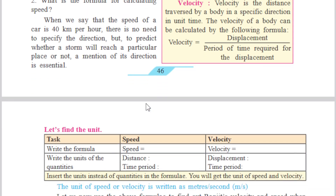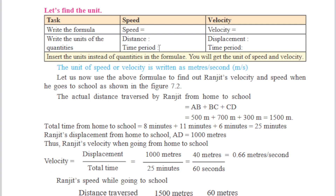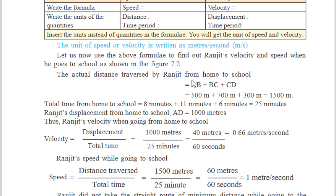Let's find the units. Write the formula for speed and then velocity. Remember that the unit of speed is written as meter per second. Now, let us use the above formula to find out Ranjit's velocity and speed when he goes to school as shown in figure 7.2. The actual distance traversed by Ranjit from home to school is AB plus BC plus CD.